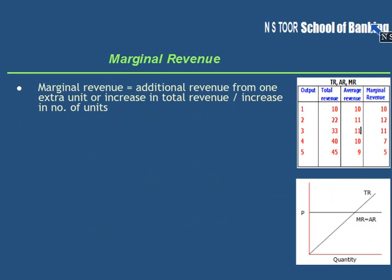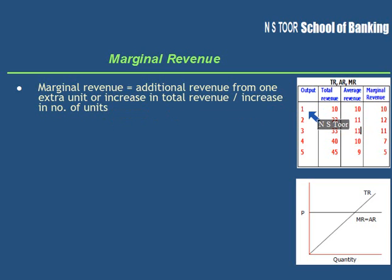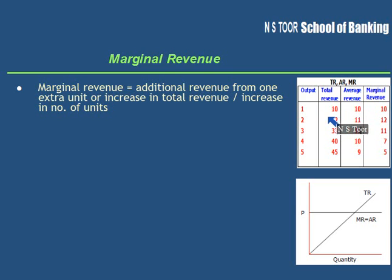What is marginal revenue? Marginal means additional revenue from sale of one extra unit. Marginal revenue means additional revenue from sale of one extra unit, or increase in total revenue divided by increase in number of units. Here, from the first unit revenue is 10, and from the second unit the total revenue is 22. Hence there is additional revenue of rupees 12 from sale of one additional unit. So this additional revenue is called marginal revenue.